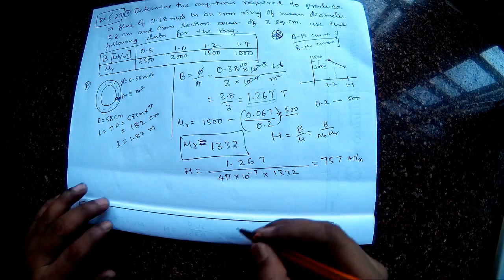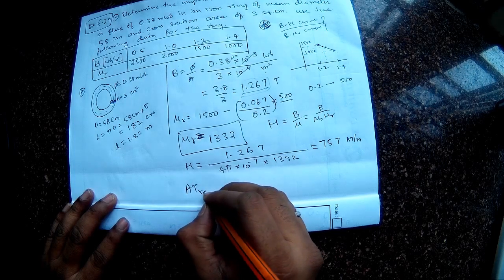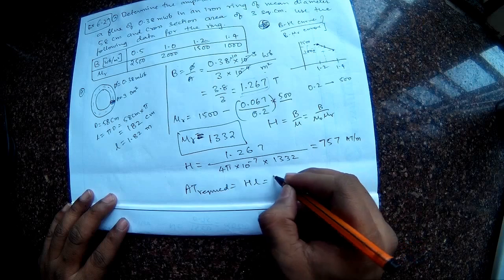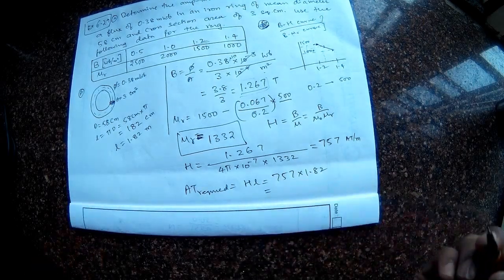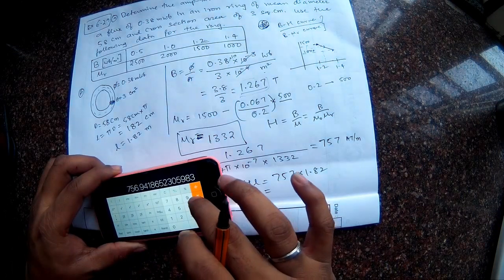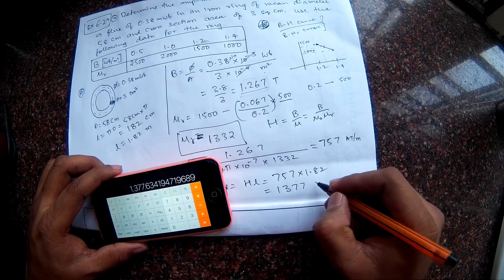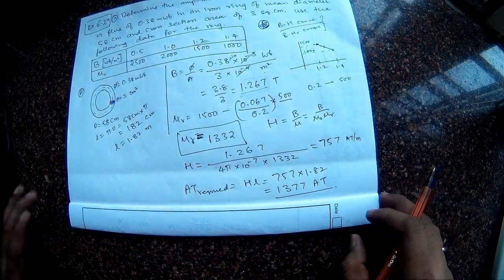So now I know the length. So if I want to find out the total ampere turns, ampere turns required is nothing but H into L. So that is nothing but 757 multiplied by 1.82. So into 1.82. So I get 1377 ampere turns. So this is our final answer for the problem.